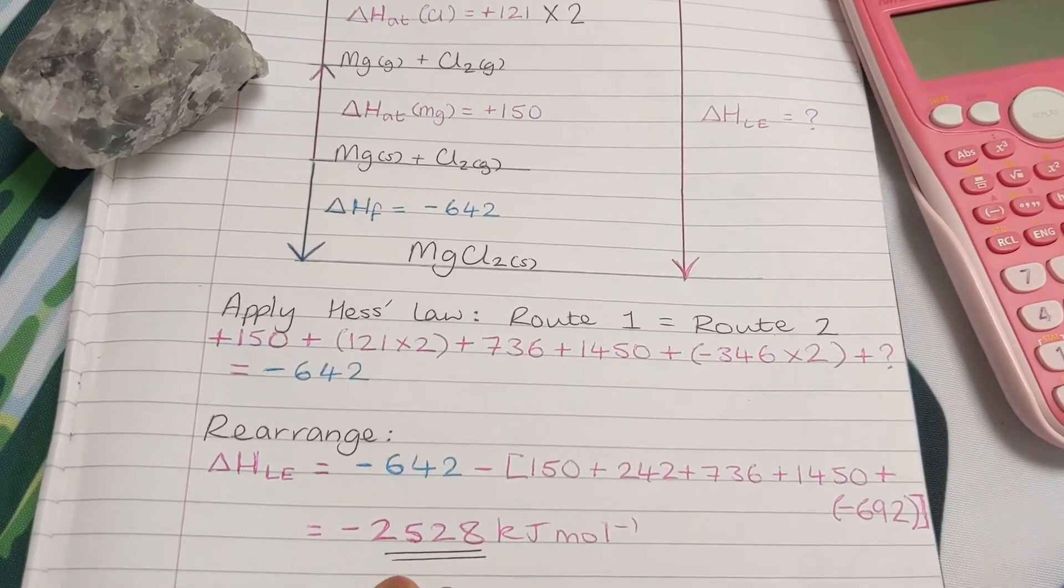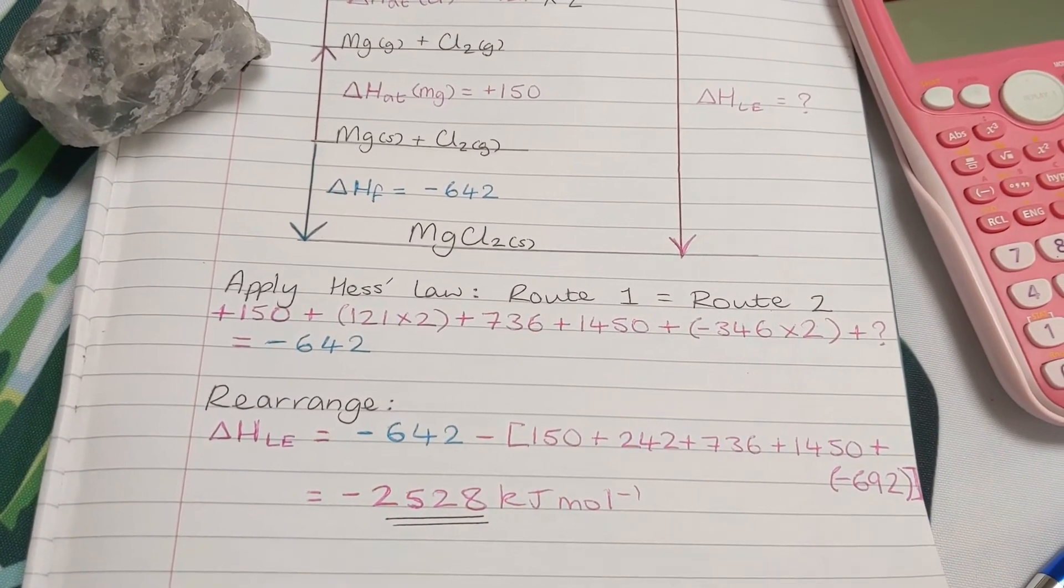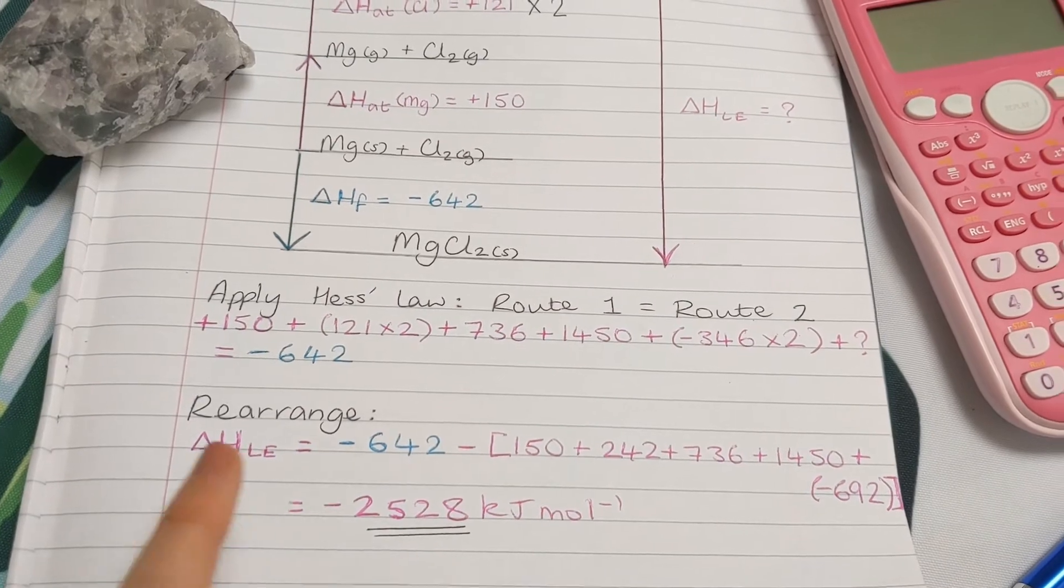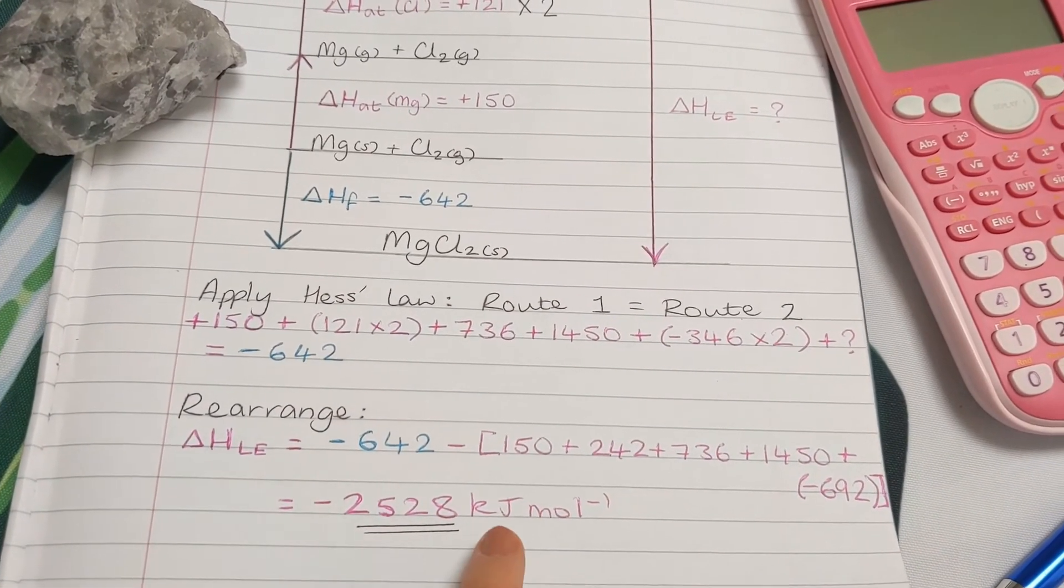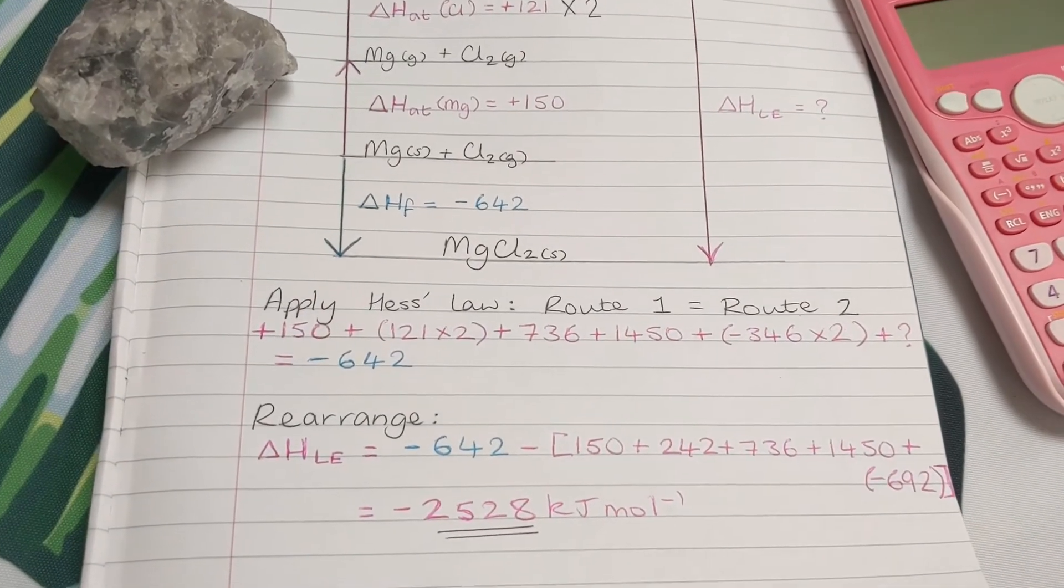And then we pop it into our calculator to get minus 2,528 kilojoules per mole. So enthalpy changes are always in kilojoules per mole. And I'll show you how to pop this in your calculator.